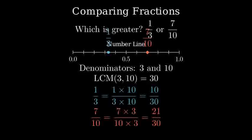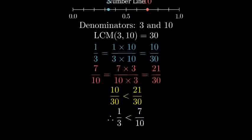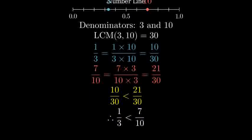Now, we can directly compare the numerators, since they have the same denominator. Ten-thirtieths is less than 21-thirtieths. Therefore, one-third is less than seven-tenths.